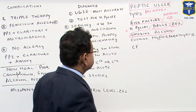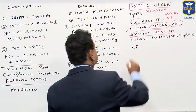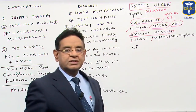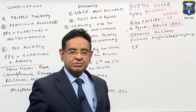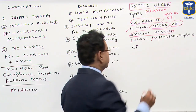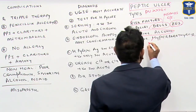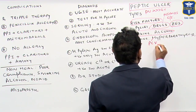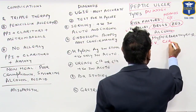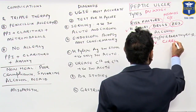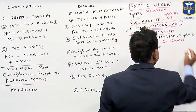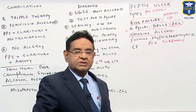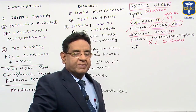Then endocrine conditions like Cushing syndrome and hyperparathyroidism also lead to peptic ulceration, including polycythemia vera and cirrhosis of liver. In these patients also, they have a higher chance of having peptic ulcers.